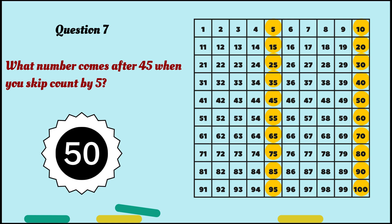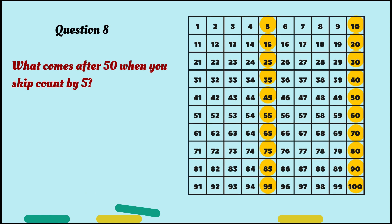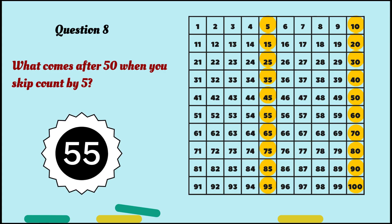Last question: What number comes after fifty when you skip count by five? I'll give you a hint — it simply means that you have to add five to fifty. Yes, the answer is fifty-five. So fifty plus five equals fifty-five. The full sequence goes: five, ten, fifteen, twenty, twenty-five, thirty, thirty-five, forty, forty-five, fifty, fifty-five, sixty. Got it? So after fifty comes fifty-five.